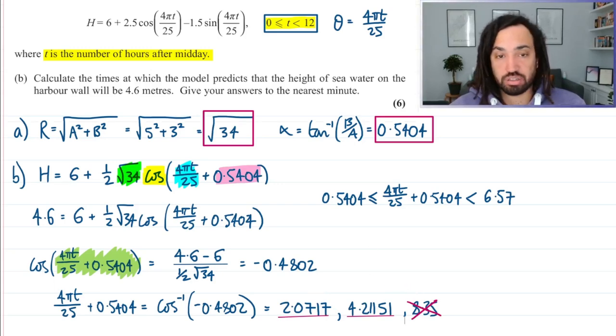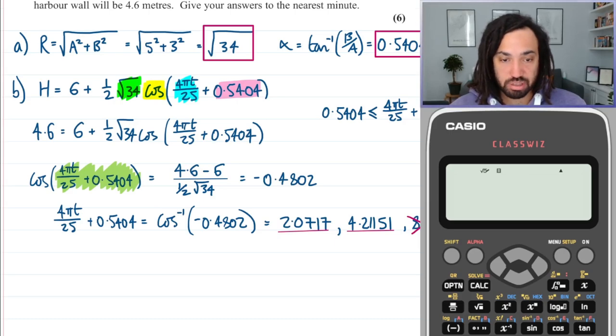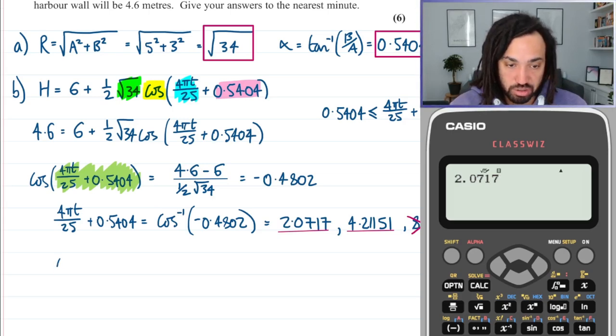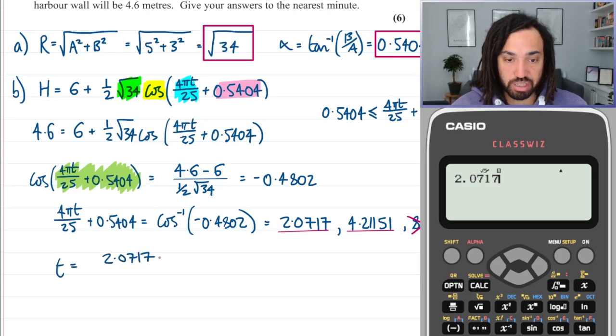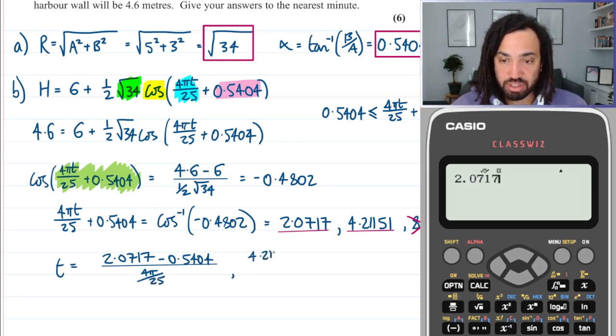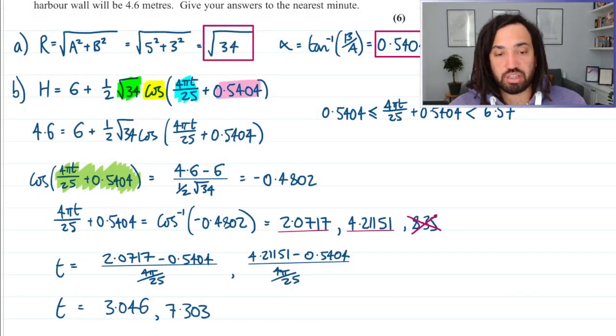We know what we're going to do. We're going to take this and run it through to find t. I can say t equals: I'm minusing 0.5404, then dividing by 4π over 25. I'm going to do exactly the same for this one as well, minus 0.5404, all over 4π over 25. That is going to isolate and find t. I've done that and I've got two values for t.